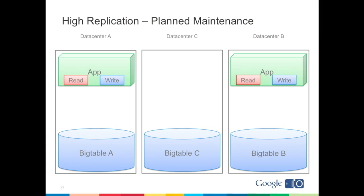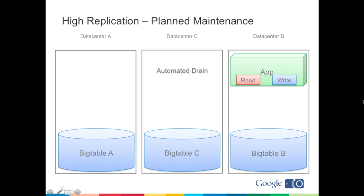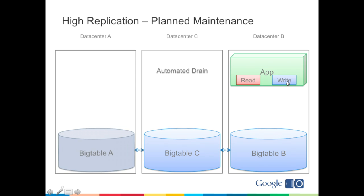In the High Replication case during maintenance: we get a signal from our infrastructure team, and our system automatically drains apps from data center A to serve them out of data center B. The infrastructure team then takes down Bigtable in data center A so it's unavailable. When we do a read, we read from Bigtable B. When we do a write, we write to a majority. Bigtable A is not responding to any writes, but the write still succeeds because a majority of replicas are still responding.